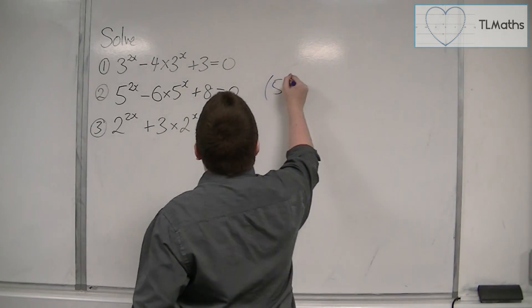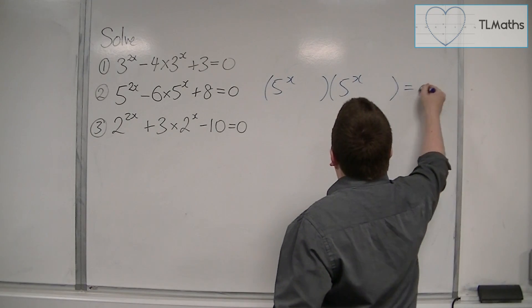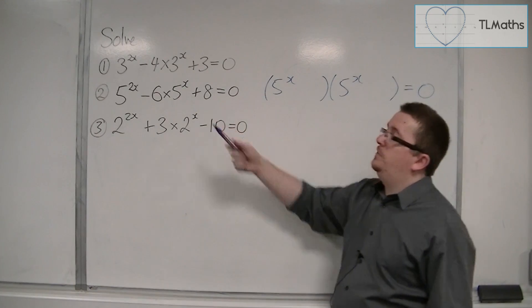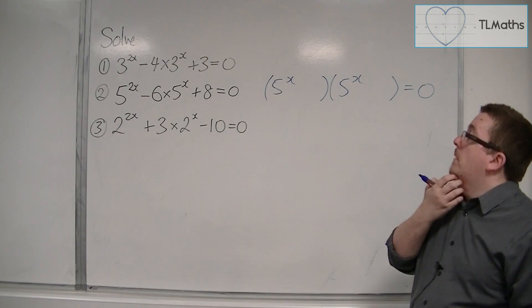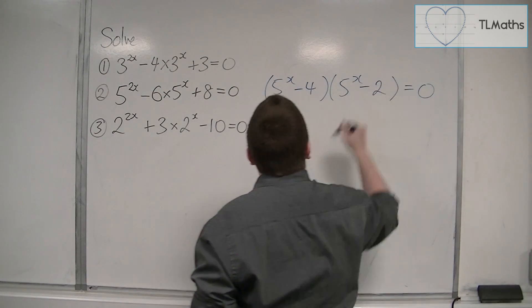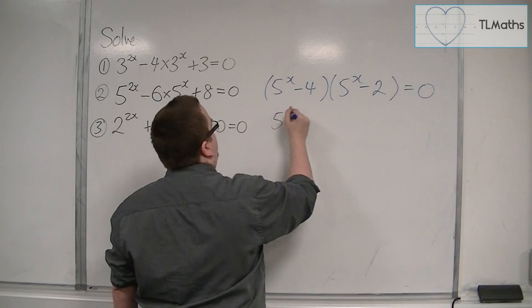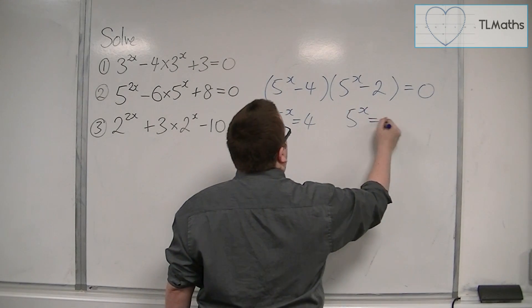So we're going to have 5 to the x and 5 to the x. Two numbers that multiply together make 8 but add together make minus 6 would be minus 4 and minus 2. So either 5 to the x is equal to 4 or 5 to the x is equal to 2.